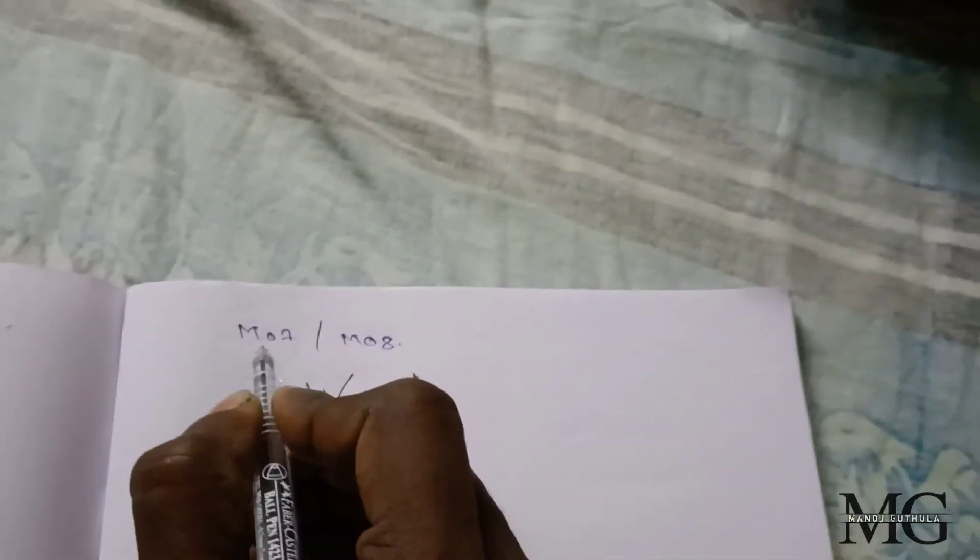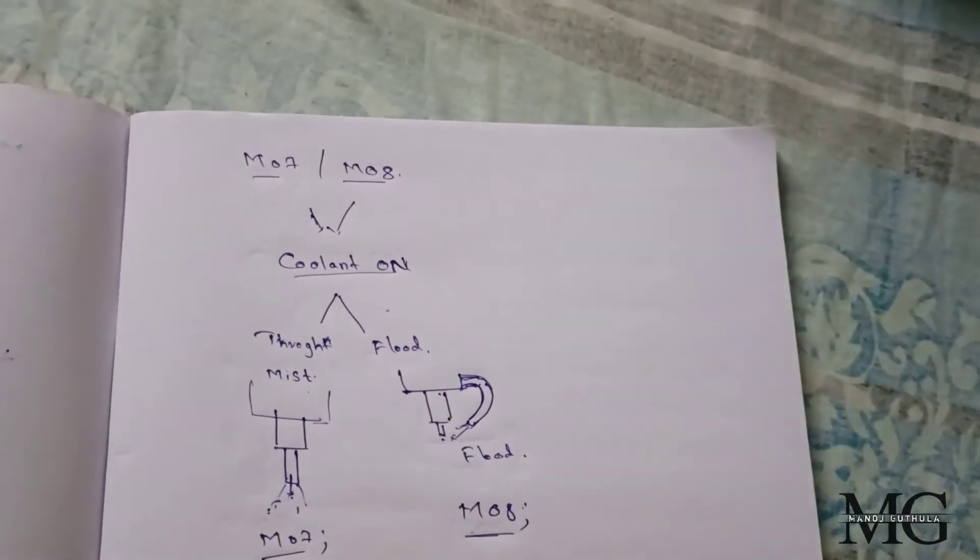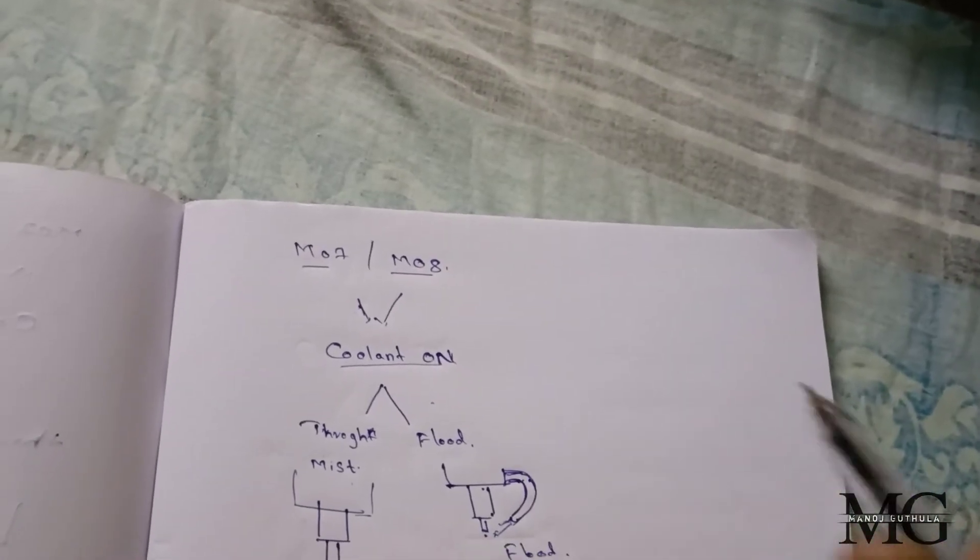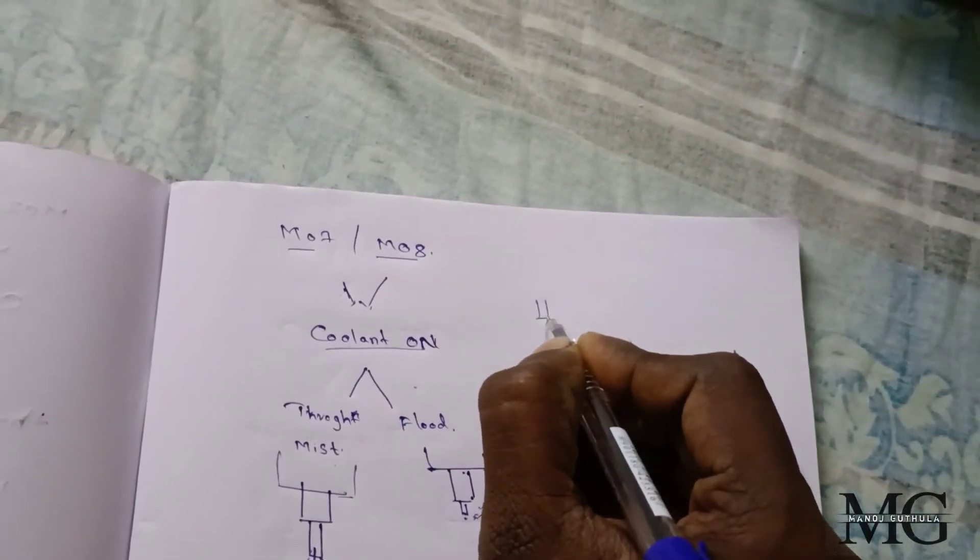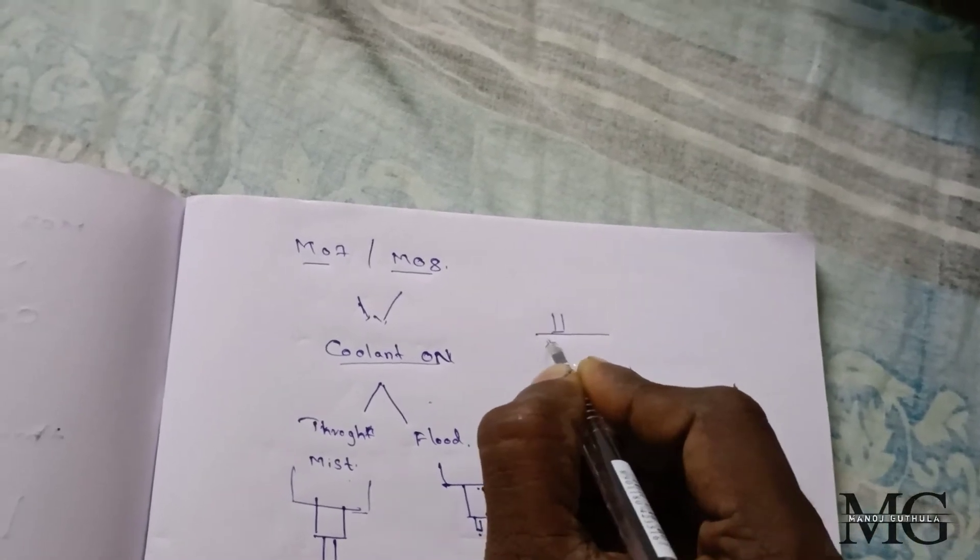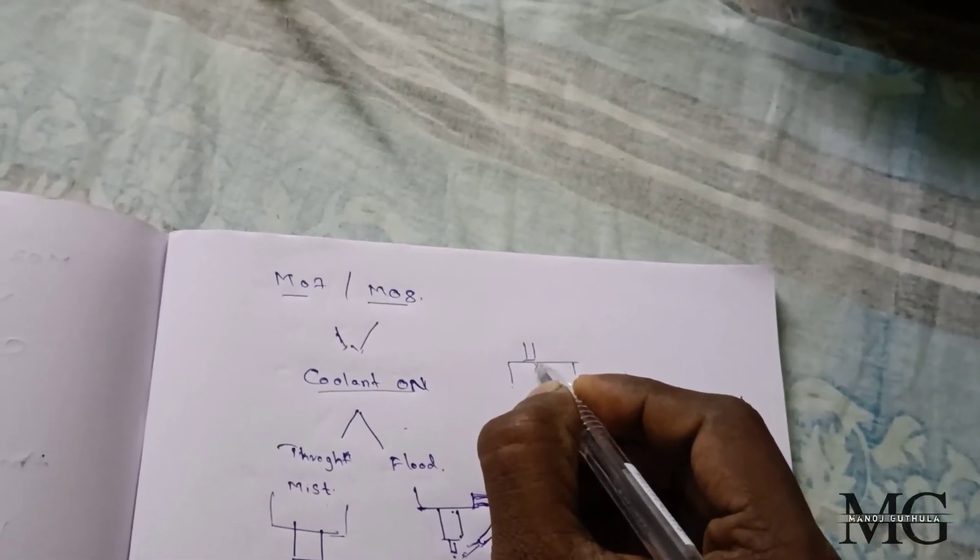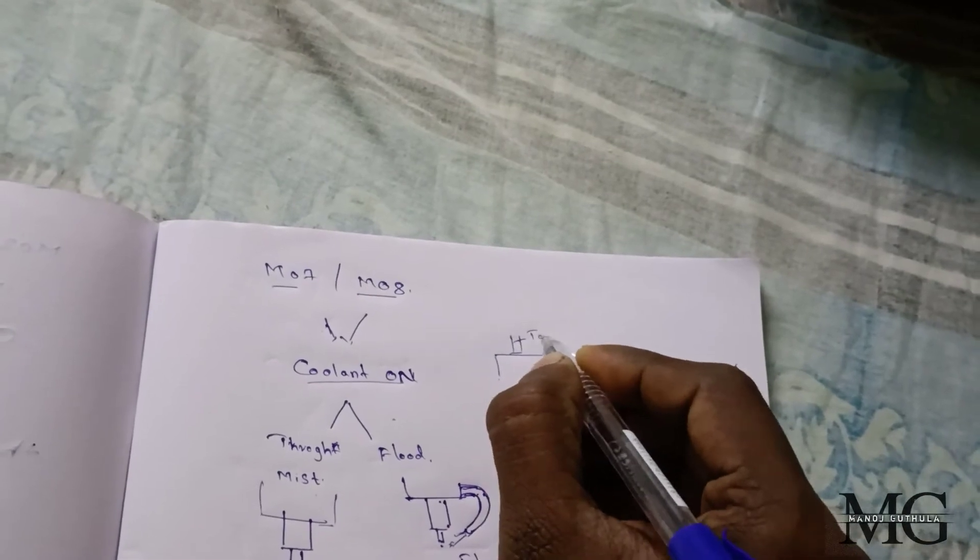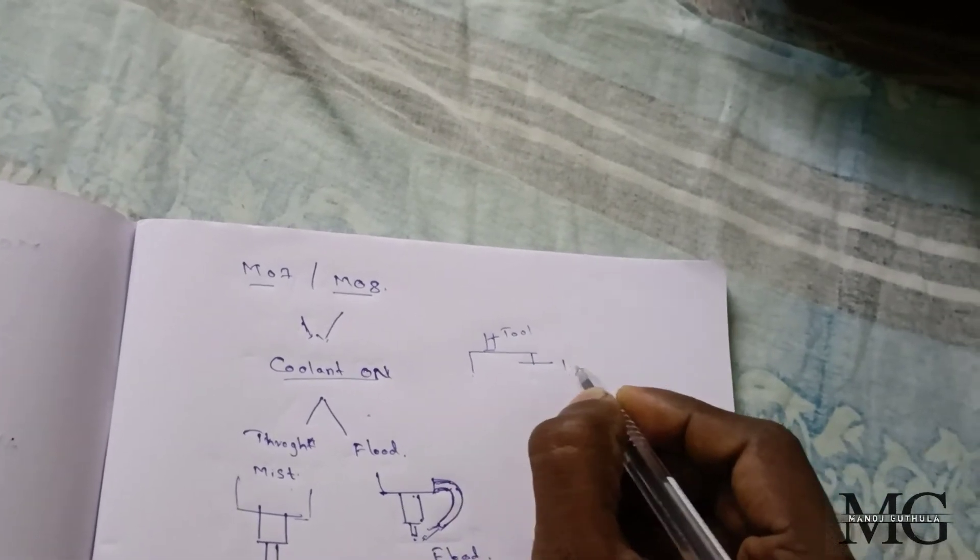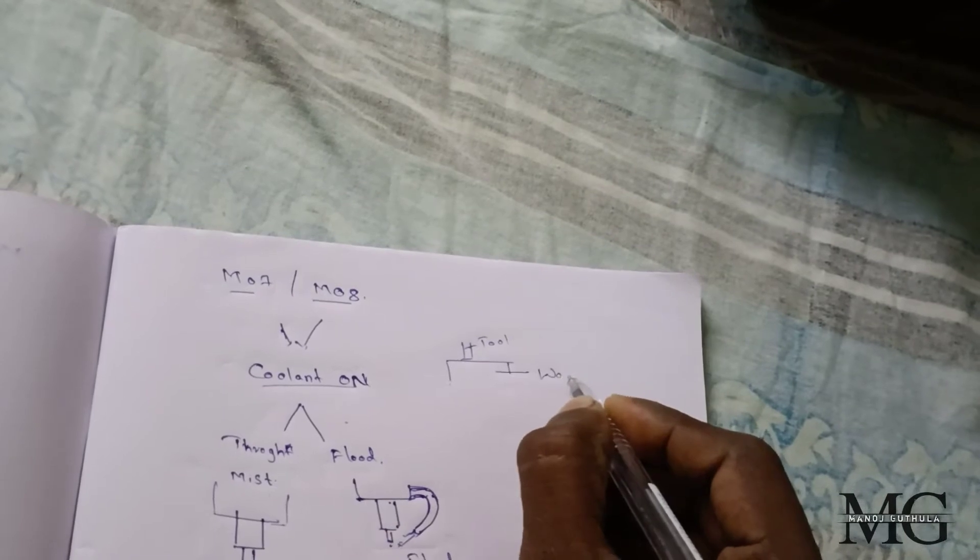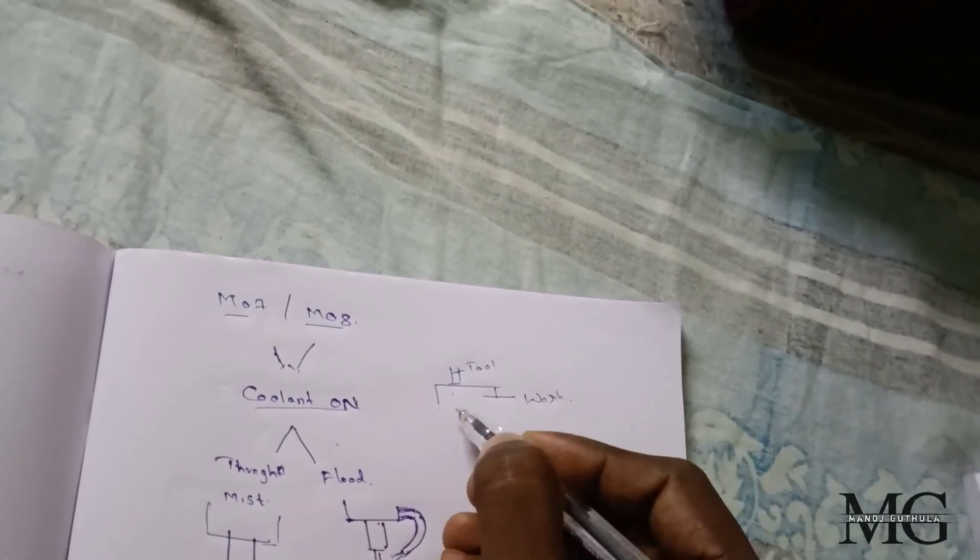Next, M07 and M08. Both refer to coolant on. Why is coolant used? Coolant is used because there is a contact between tool and work. When there is contact between both metals, high heat is generated which reduces tool life. With heat, there is also a large amount of chip formed. To run away this chip, coolant is also used.